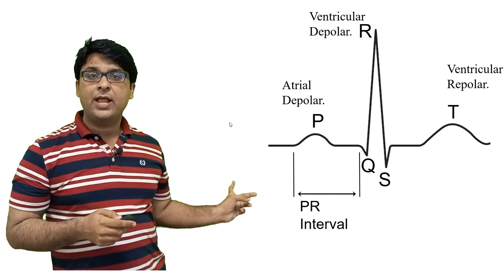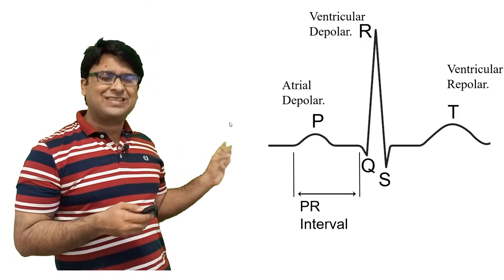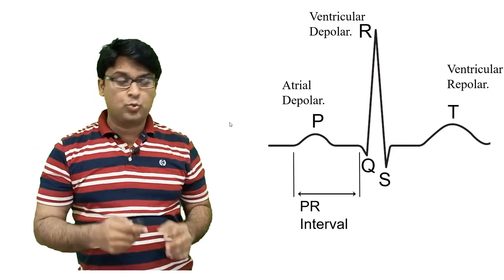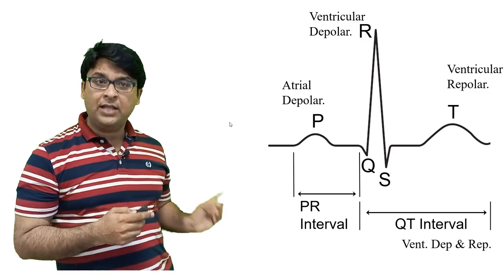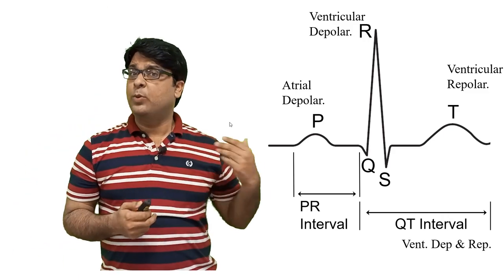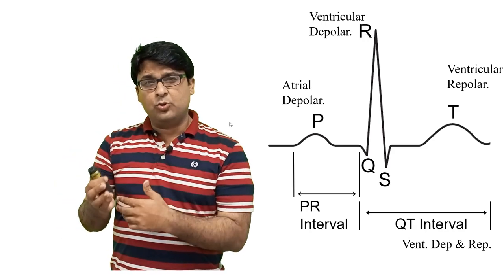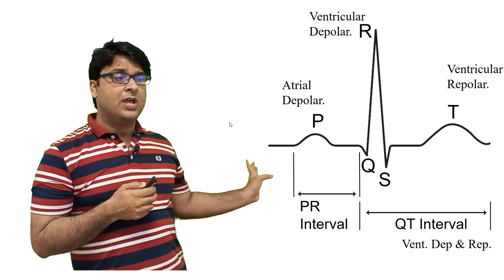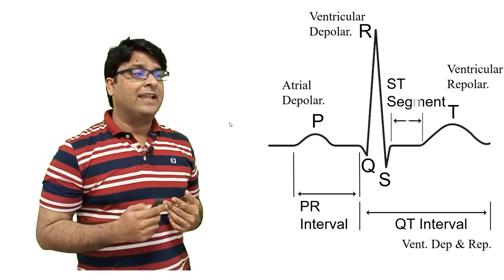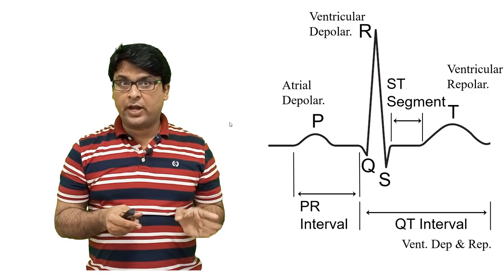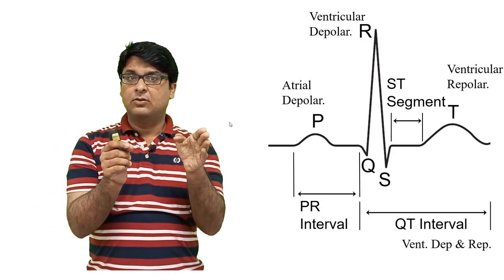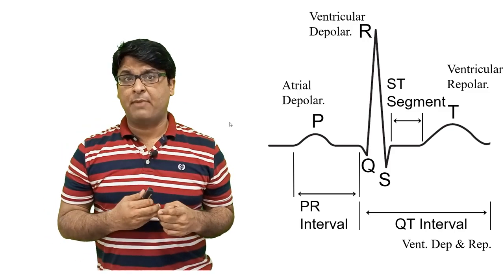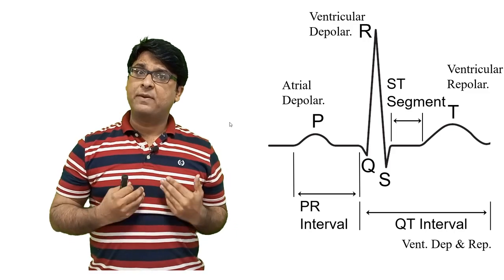You need to know the PR interval — from the start of the P wave to the beginning of the Q wave. Then the QT interval: from the beginning of the Q wave to the end of the T wave. We will later discuss long QT, short QT, and conditions associated with them. The ST segment — the distance between the S wave and the T wave — is extremely important, as it is elevated in MI and depression is associated with many important findings.